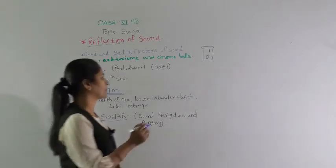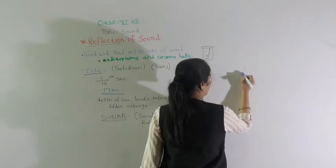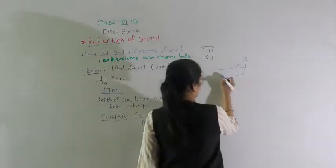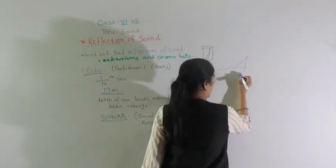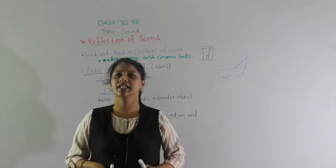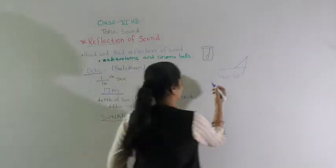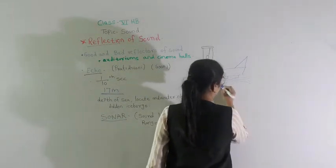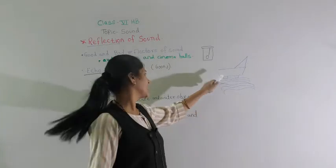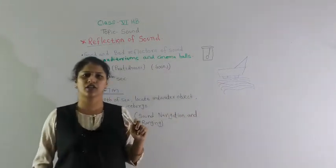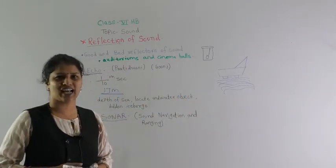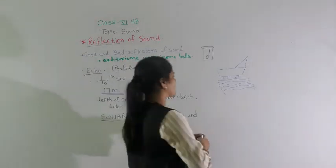Now we will see how it works. Suppose this is a ship. At the bottom of the ship, two devices are fitted. There are two devices. The one device is called the transmitter and another is called the receiver.